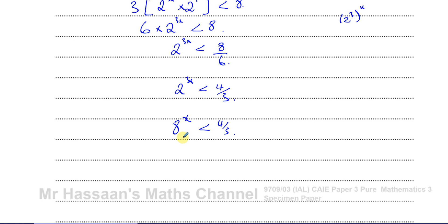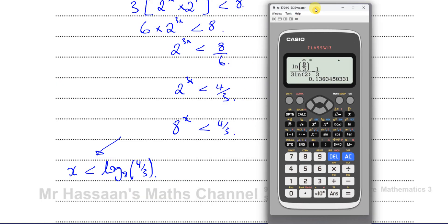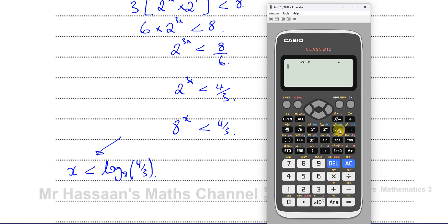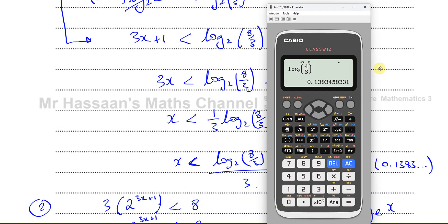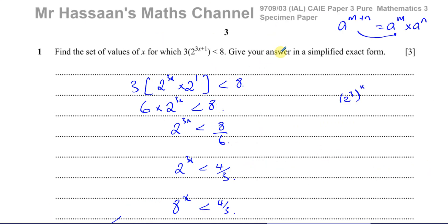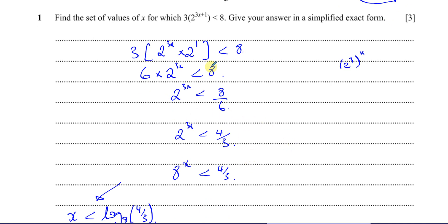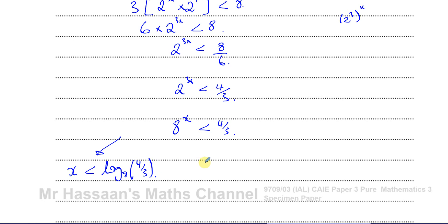Taking log base 8 of both sides of 8^x is less than 4 over 3 gives x is less than log base 8 of 4 over 3. That's the answer. It looks a lot simpler, though there was extra work simplifying it first. Checking the decimal value of log base 8 of 4 over 3 gives exactly the same answer — 0.1383.